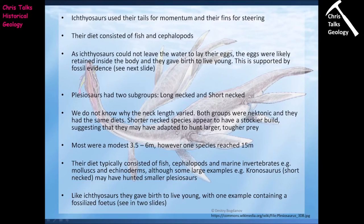When we look at the short-necked plesiosaurs, one of the things we notice is that on the whole their build appears to be stockiest — more heavily built. This would suggest that the shorter-necked plesiosaurs may well have been designed for hunting larger, tougher prey. The long-necked plesiosaurs, with their more refined spinal column and long neck, may have been better suited for hunting small prey like fish, whereas the short-necked plesiosaurs might have been better suited for hunting larger, tougher prey items.